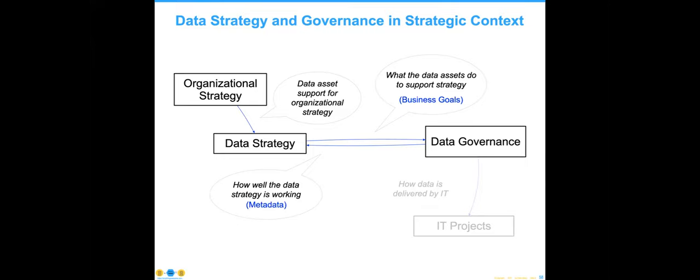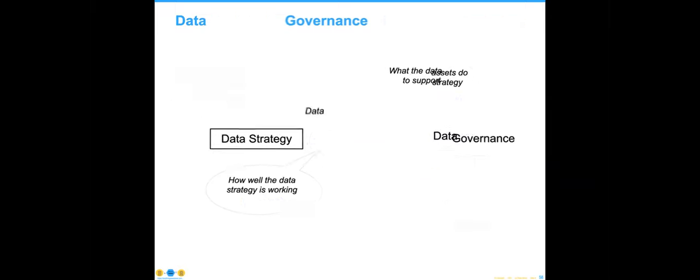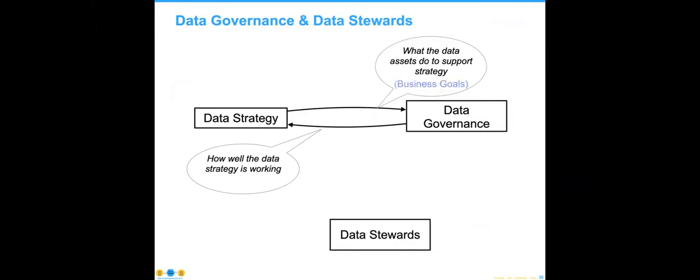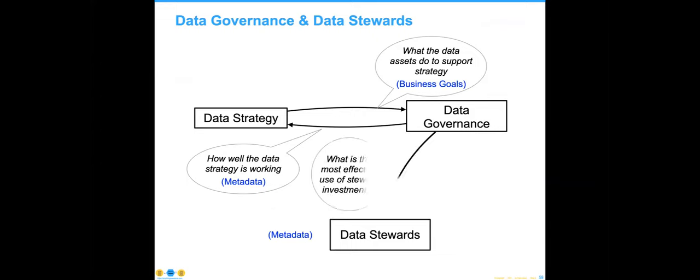What the data assets do to support strategy needs to be expressed in terms of business goals — if we don't tie them to something specific, the organization will look at you as a cost rather than a value component. The language of data governance has to be metadata. If you do things not focused on metadata, you will end up with confusion — people not sure why they're at the meeting or what the importance of the topic is. The way to think about metadata is that it's a lot like sheet music: if you're going to present a group of musicians playing something, they need to have the same sheet music.